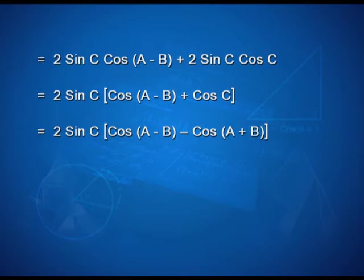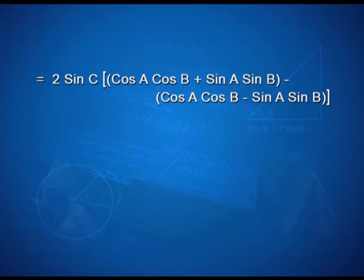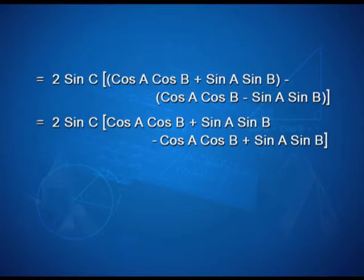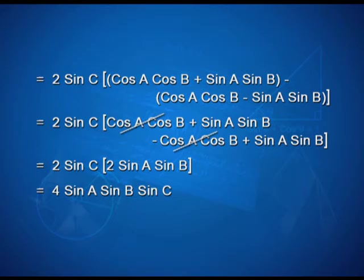Using the identity, cos(A-B) minus cos(A+B) equals 2 sin A sin B, we expand: 2 sin C [cos A cos B plus sin A sin B minus cos A cos B minus sin A sin B]. Wait — replacing cos C as cos(pi minus (A+B)) equals minus cos(A+B), we get 2 sin C [cos(A-B) minus cos(A+B)], which equals 2 sin C into 2 sin A sin B. Thus the result equals 4 sin A sin B sin C, which is the RHS.